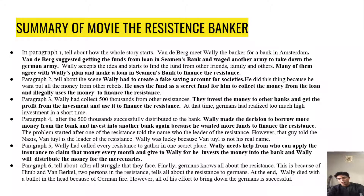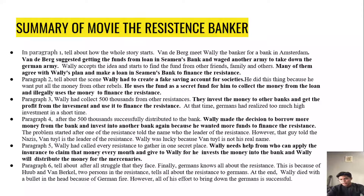In paragraph 4, after the 500,000 was successfully distributed to the bank, Wally made the decision to borrow more money from the bank and invest it into another bank again because he wanted more funds to finance the resistance. The problem starts here: one of the resistance members was caught by the German army and told them the name of the leader of the resistance. However, that person told the Nazis that 'Vantai' is the leader. Wally was lucky because Vantai is not his real name.